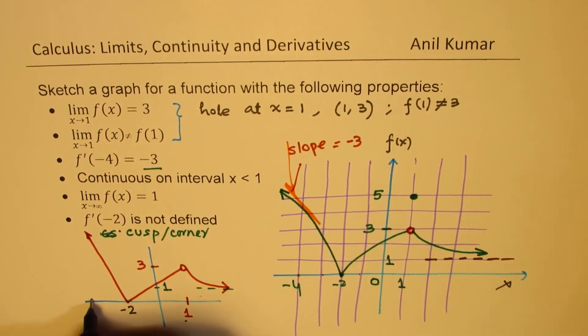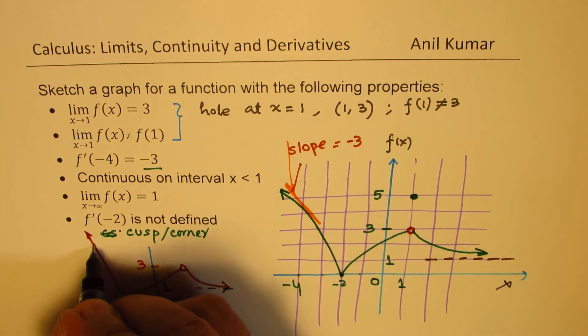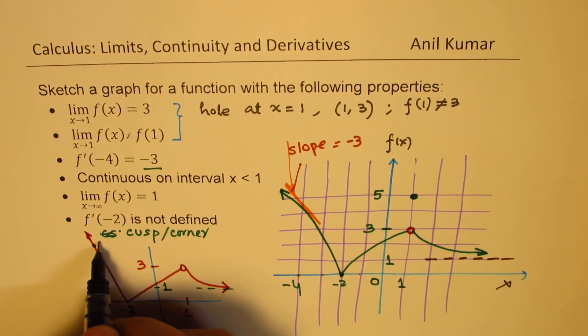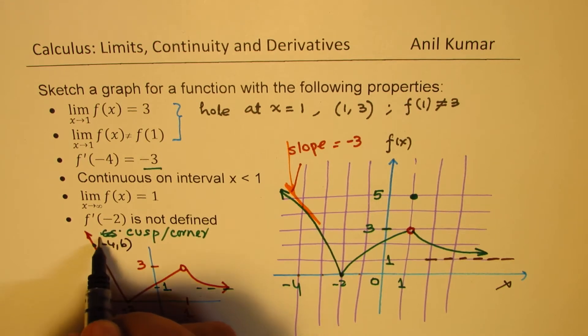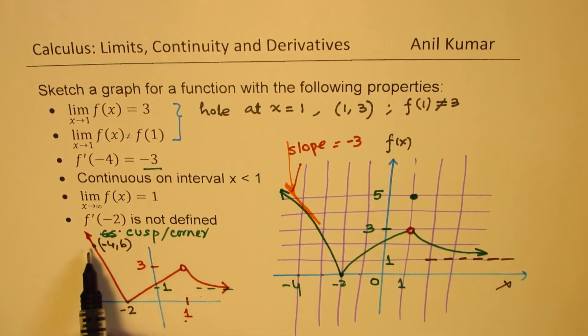This is minus 2. So at minus 4, we could have a point which is, let us say 6. So at minus 4, if I have 6, in that case, the slope of this line is going to be negative 1.